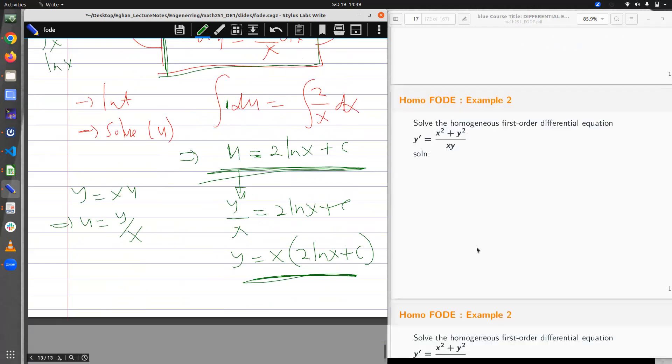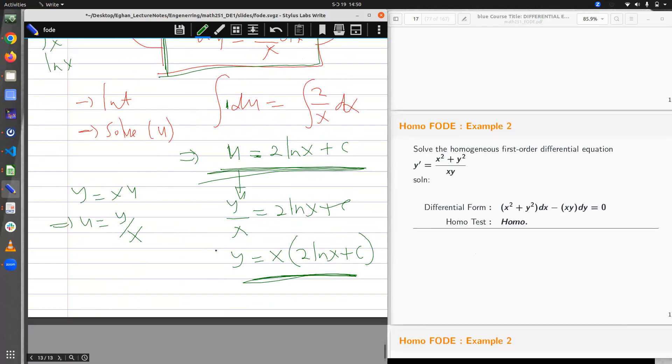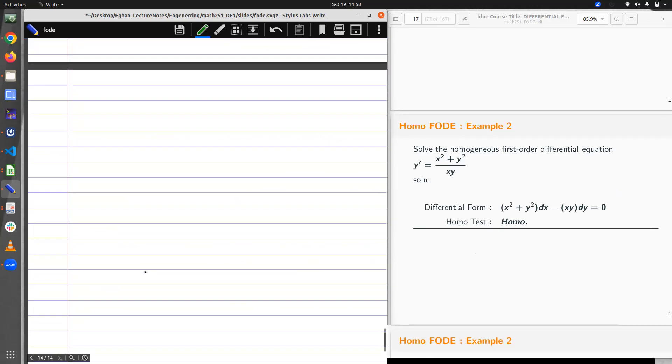I hope this is well understood. The second example. Example 2. I have y prime is equal to x squared plus y squared all over x y. Because this is an example on first order, it would not be separable. Is it homogeneous? I must test. But first you need the differential form. So I have dy/dx is equal to x squared plus y squared all over x y. With the cross multiplication, I have x y dy is equal to x squared plus y squared times dx.